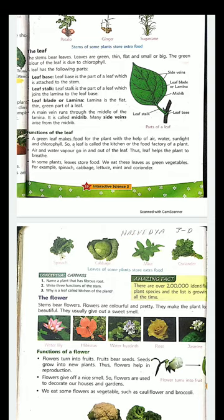Here is an amazing fact: there are over 200,000 identified plant species, and the list is growing all the time. The world is full of different kinds of trees and plants. Till the date this book was printed, 2 lakh different kinds of plant species had been identified. But the list is not stopped there — it keeps on growing, because we are identifying new types of plants daily.